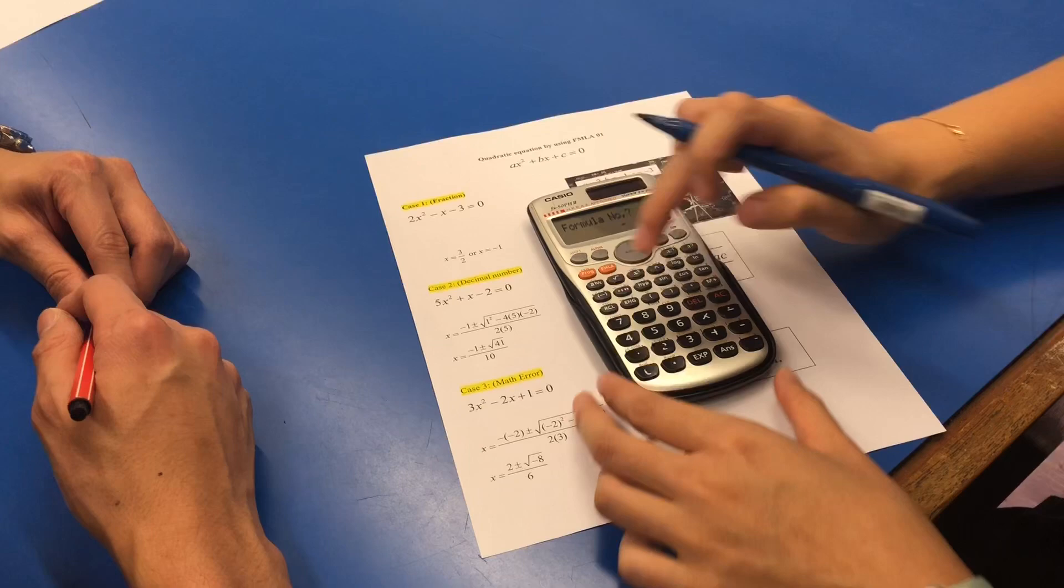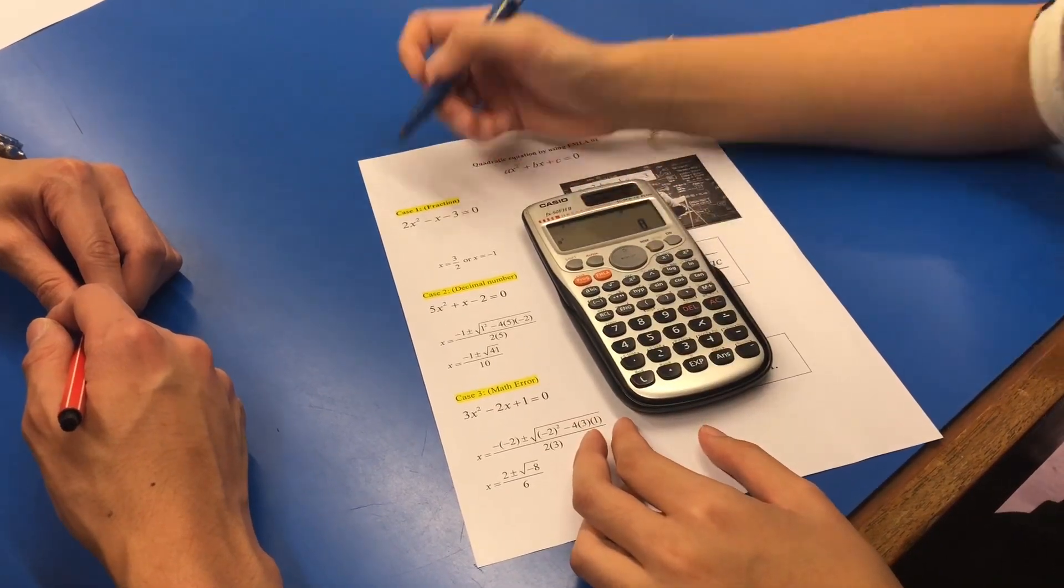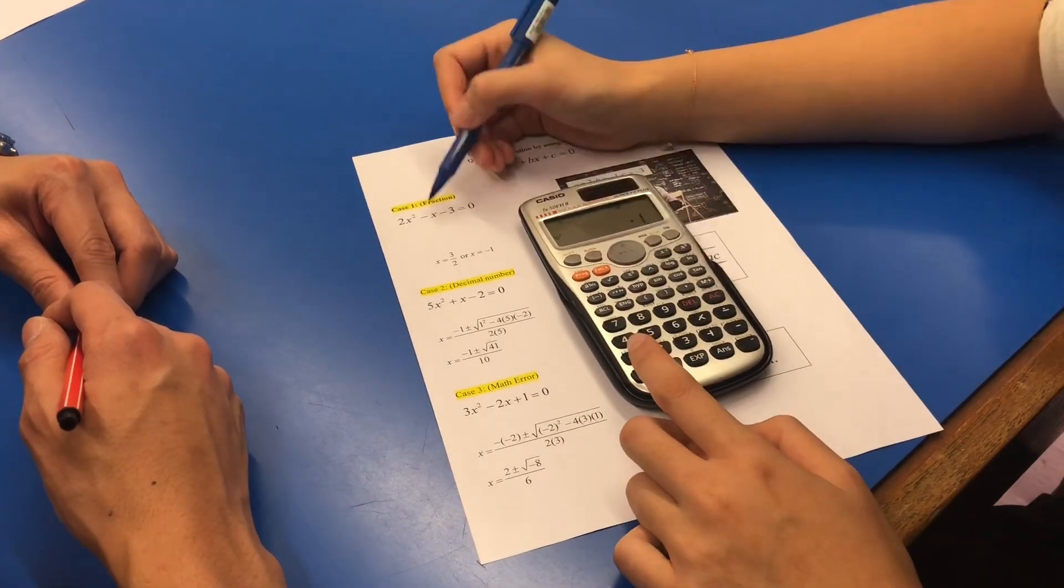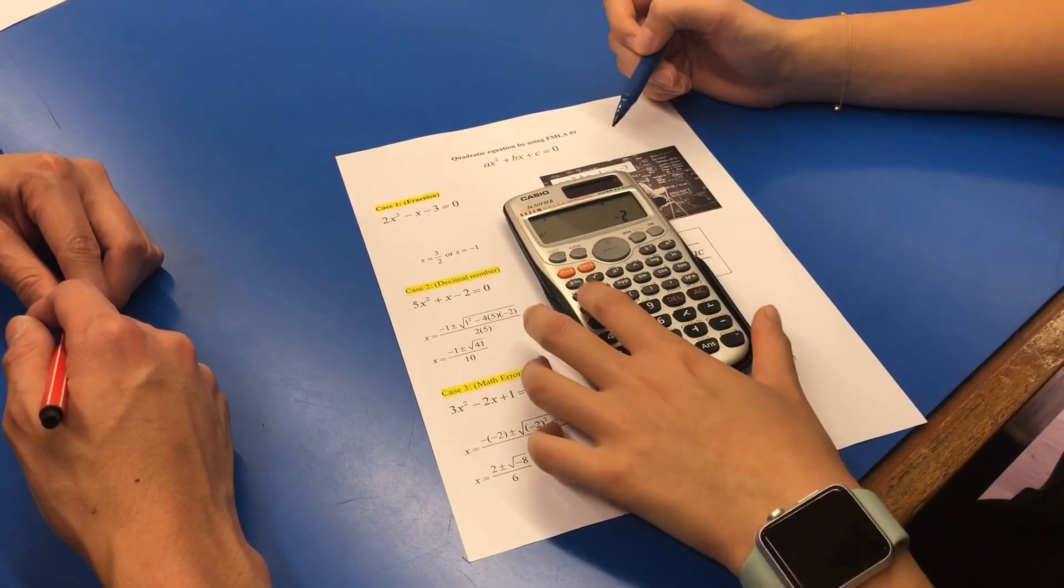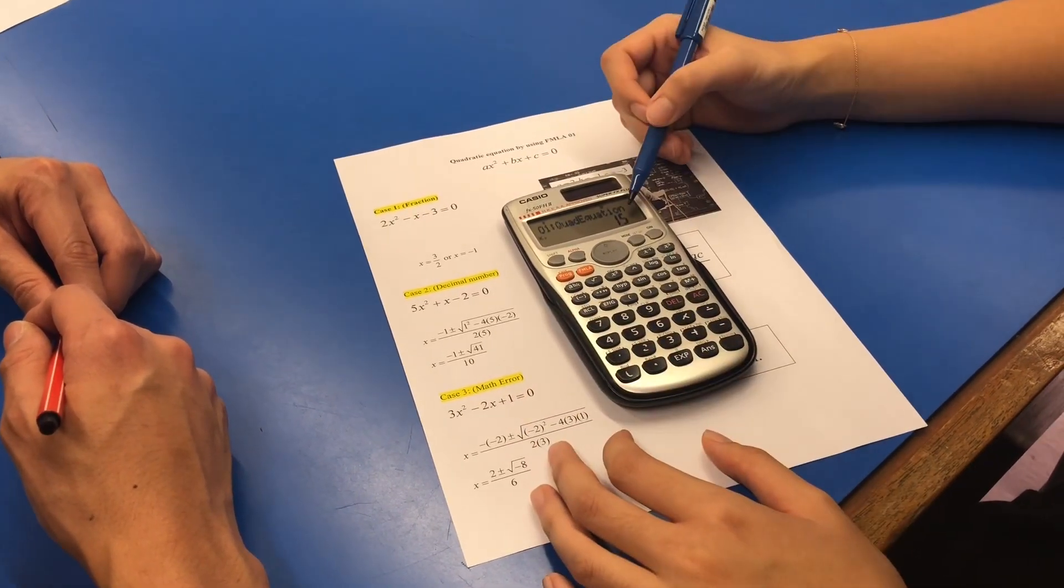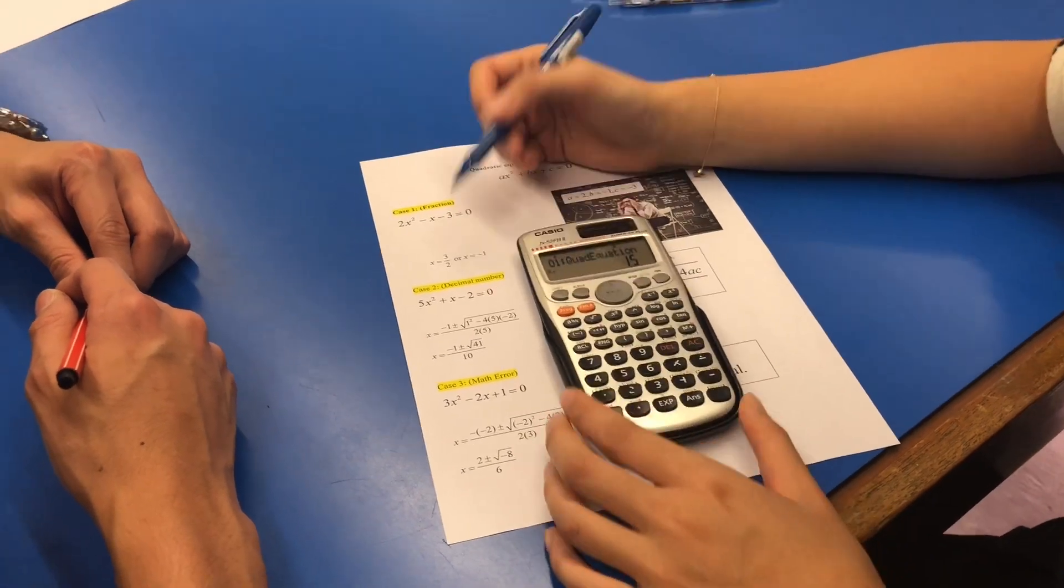Then input negative 3. You get a fraction, so your final answer is 1.5. The ABC button gives you 3 over 2, and also x equals negative 1.